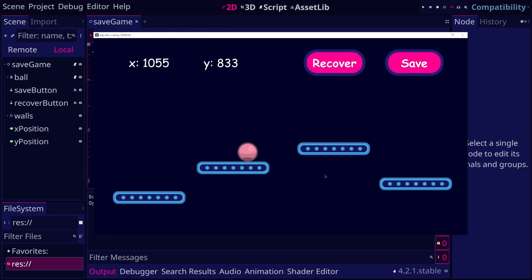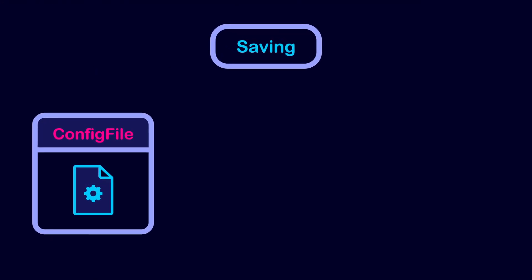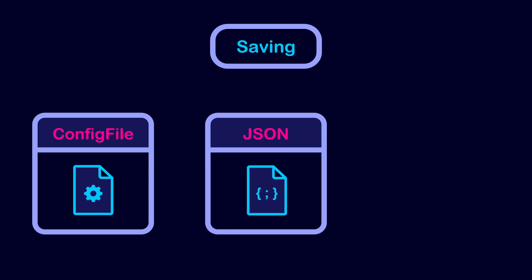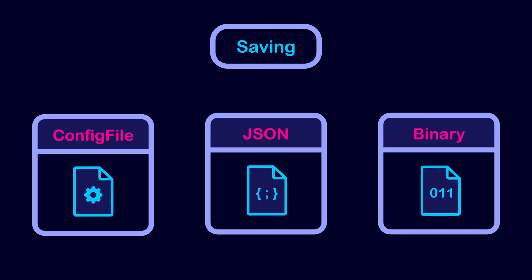One solution for this issue is to save the game data in a file. To do so, you can use the config file class in Godot, or you can save the game data in a JSON file, or you can save the game data in a binary serialized format. These are some of the common ways to save the game data.